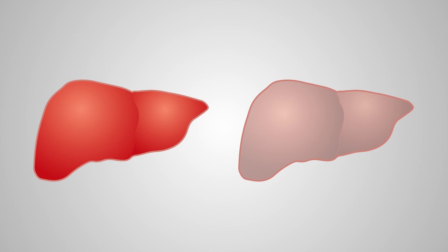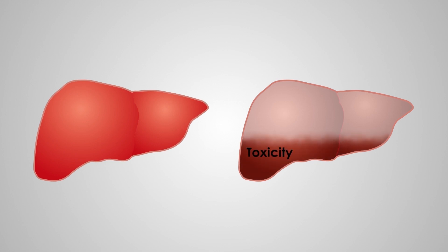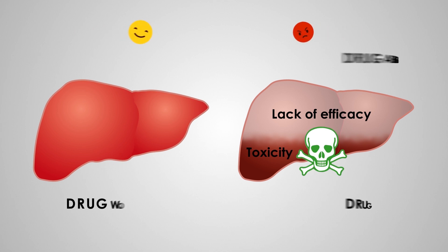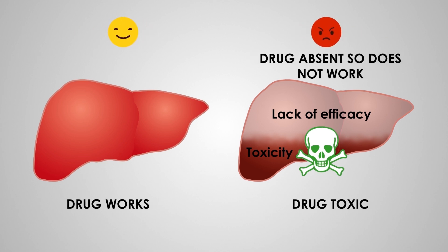In liver 2, the same total amount of drug is taken up. However, one-third of the cells take up three times as much drug, while two-thirds of cells take up none. The drug won't work here because not enough is taken up in some cells, or too much drug in other cells becomes toxic. These are the two main causes behind drugs failing in development.